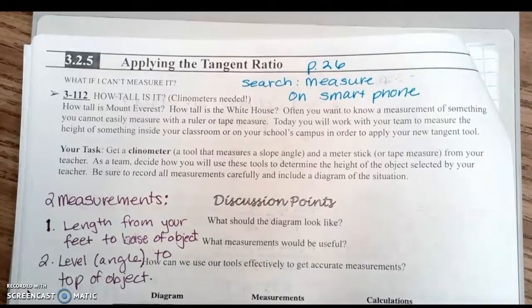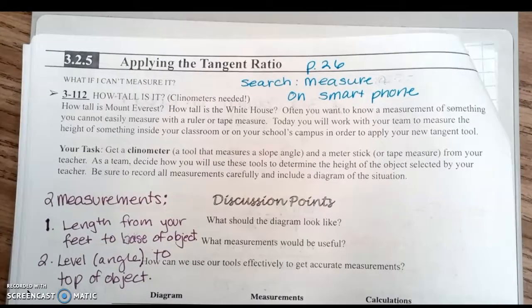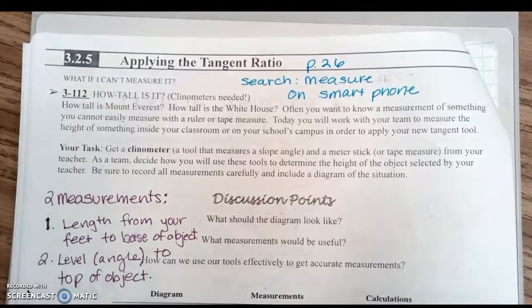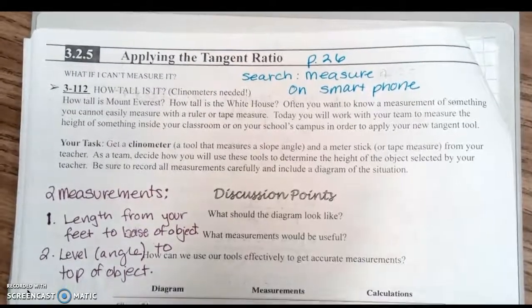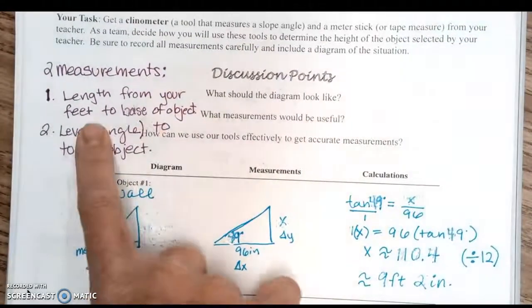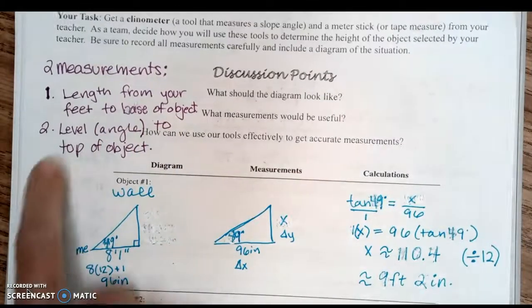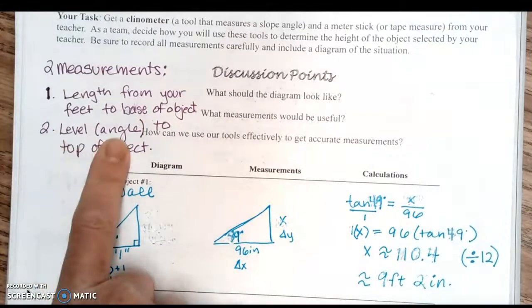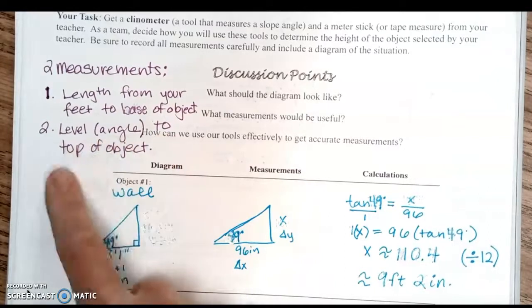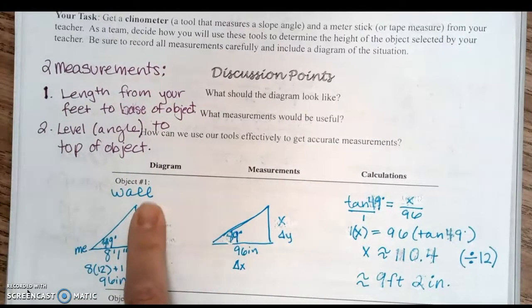Be sure to record all measurements carefully and include a diagram of the situation. The two measurements you need are the length from your feet to the base of the object, and the angle (what we call the level) to the top of the object. I started by measuring the wall in this classroom.